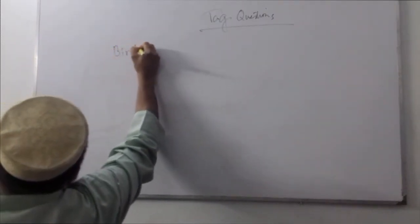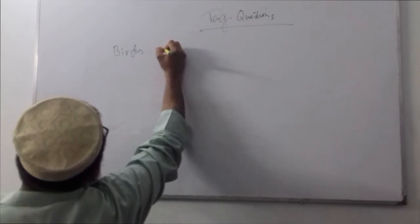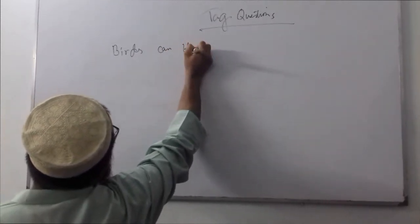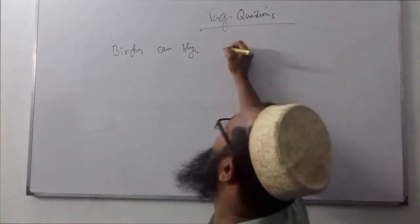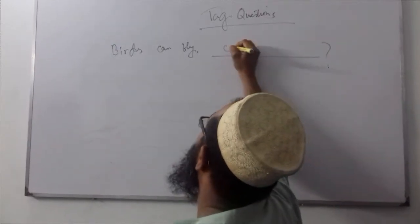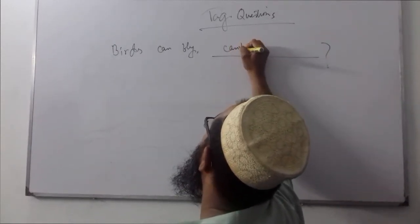For example, at the beginning, birds can fly. It's not too much to take a look at the tag portion. If you've got a tag portion, it's not too much to take care.